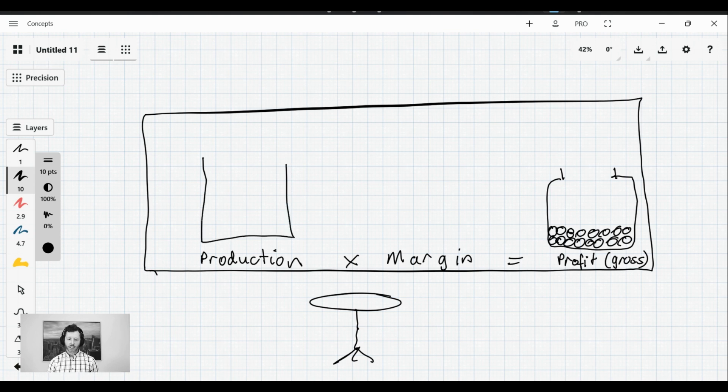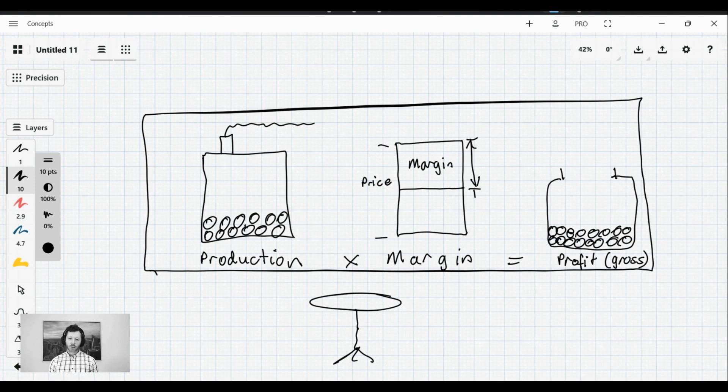So our production is essentially our factory and in any given month we'll produce a certain number of our products whether that's loaves of bread or handbags or whether it's a service business it'll be how many hours of work you deliver to customers. Our margin is defined by the price minus whatever it costs us to deliver that. So if it's a service our cost of delivery is our labor cost and for a product it's our cost of materials and manufacturing.